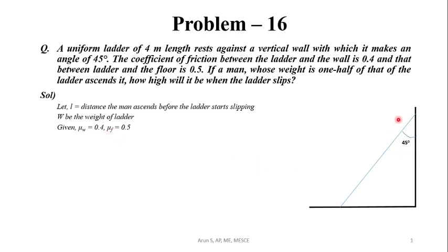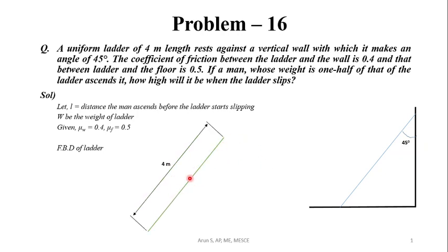Now we are drawing the free body diagram of this ladder. The length of the ladder is 4 meters. Since it is a uniform ladder, the weight acts at the center of gravity, which is vertically downward. Let W be the weight of the ladder, acting in the vertical downward direction at a distance of 2 meters from the base.